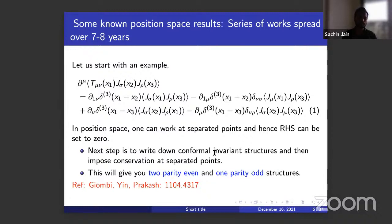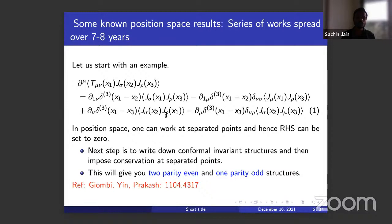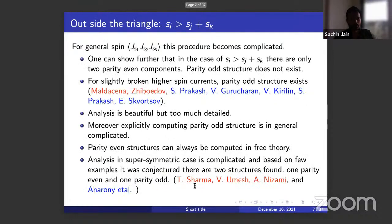To start with, let's take a simple example: JJT — spin one, spin one, and spin two current. The Ward-Takahashi identity for this is written in the equation here. As you can see, there are explicit appearances of the delta function. If you work at separated points, the right-hand side can be set to zero. The way to calculate the correlator is to write down conformally invariant structures and then impose conservation at separated points. Doing this in three dimensions gives you two parity-even and one parity-odd structure.